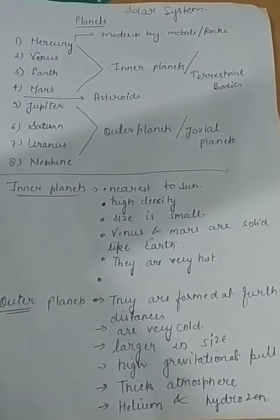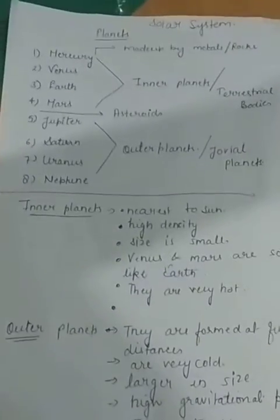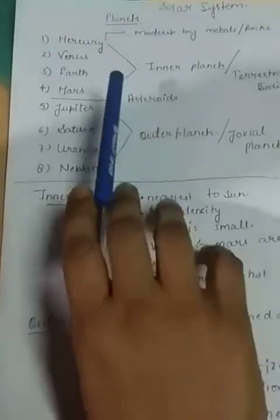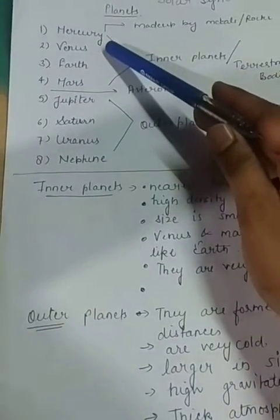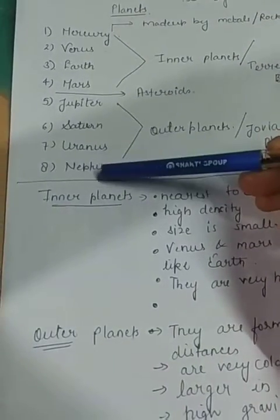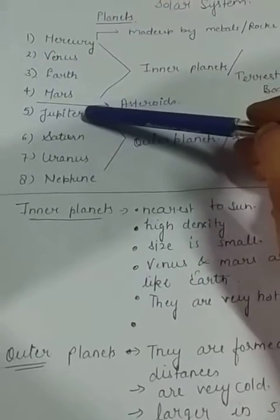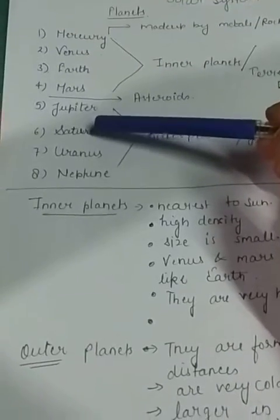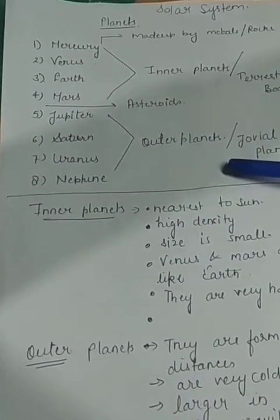The sun and its 8 planets you had studied in your previous classes. So now today we are going to study about different kinds of planets. We have 8 planets nowadays. Mercury is the first planet, then Venus, Earth, Mars. After that Jupiter, Saturn, Uranus, and Neptune. The first four planets we can call inner planets — they are nearest to the sun. Jupiter, Saturn, Uranus, and Neptune are the outer planets and they are very far from the sun.